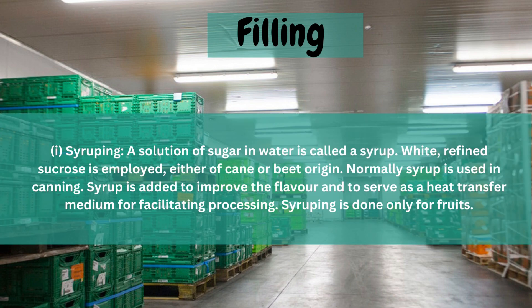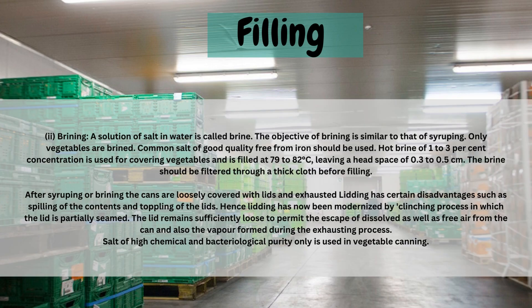Syruping: A solution of sugar in water is called syrup. White or refined sucrose is employed, either of cane or beet origin. Sucrose syrup is used in canning and is added to improve the flavor and to serve as a heat transfer medium for facilitating processing. Syruping is done only for fruits. Brining: A solution of salt in water is called brine. The objective of brining is similar to syruping. Only vegetables are brined.